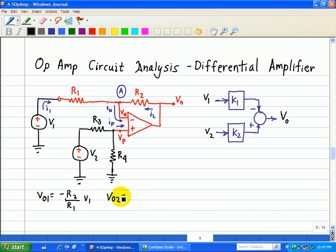VO2, on the other hand, you can see here that Vp is a voltage divider due to V2. And when we zero out V1, this would yield the output due to V2. And that now this would be a non-inverting gain of R2 over R1 plus 1.